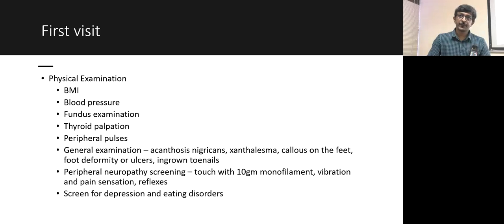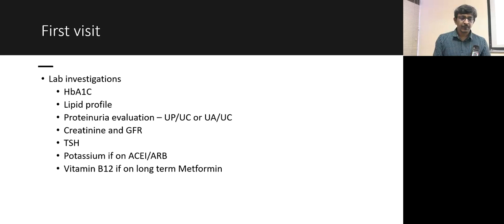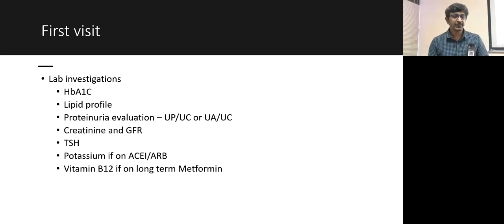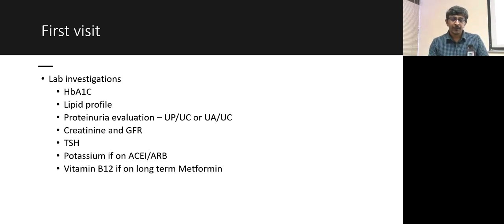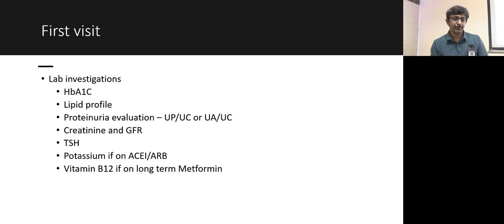The assessment should also include screening for depression and eating disorders. On the first visit, send HbA1c, lipid profile, urine protein evaluation (UPCR or urine albumin-to-creatinine ratio), creatinine with GFR calculation, and thyroid function tests. If on ACE inhibitors or ARBs, also check potassium. If on long-term metformin, consider screening for vitamin B12 deficiency.